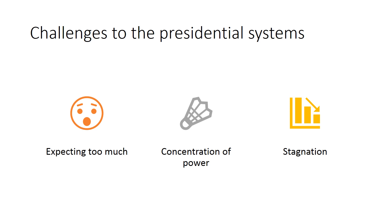The presidential system works under the very important principle of compromise — the branches must work together and compromise with each other for the system to survive. Check and balance means that neither branch has the power to dissolve or deconstruct the other; in particular, the executive cannot dissolve parliament or call for early elections. Based on the American experience, it seems to be a very functional and successful system.